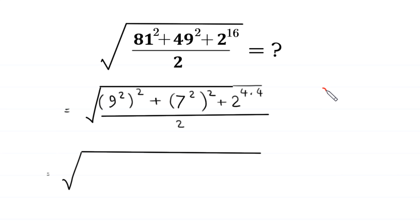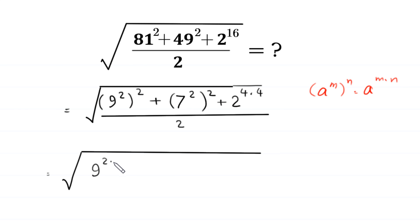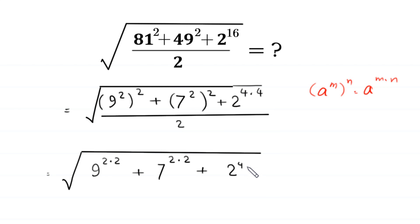By using the power rule — a to the power m, whole to the power n, is equal to a to the power m times n — this 9 squared whole to the power 2 becomes 9 to the power 2 times 2, plus 7 squared whole to the power 2 becomes 7 to the power 2 times 2, plus 2 to the power 4 times 4 written as 2 to the power 4 whole to the power 4, divided by 2.